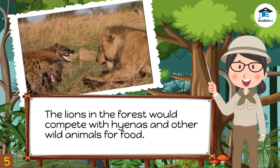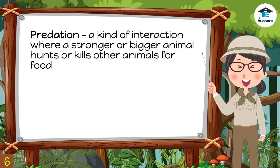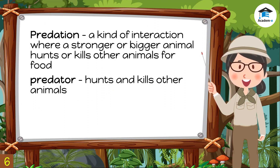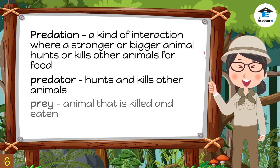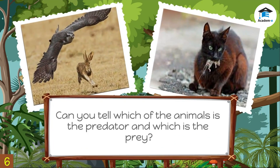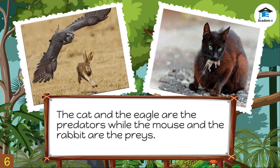Another example is when lions in the forest compete with hyenas and other wild animals for food. Predation is a kind of interaction where a stronger or bigger animal hunts or kills other animals for food. That animal is called a predator, and the animal that is killed and eaten is called a prey. For example, the cat and the eagle are the predators, while the mouse and the rabbit are the prey.